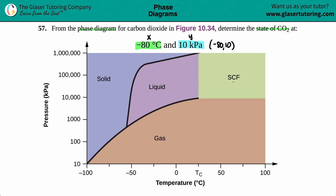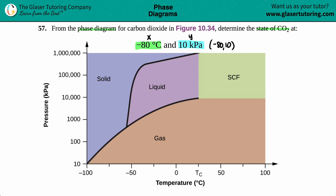Now, starting with negative 80 degrees Celsius: it has to be between negative 50 and negative 100, and the middle marker is negative 75, so negative 80 is just slightly past that. I'll draw a straight line up to indicate all possibilities at negative 80 degrees Celsius.